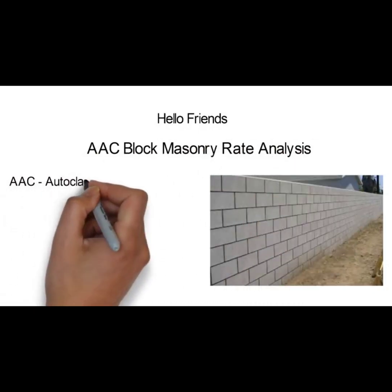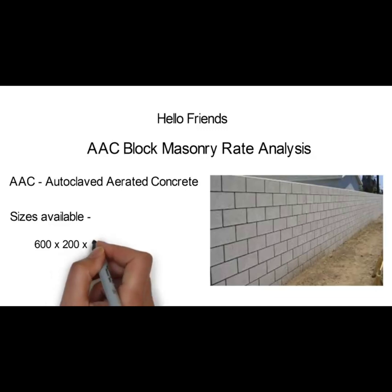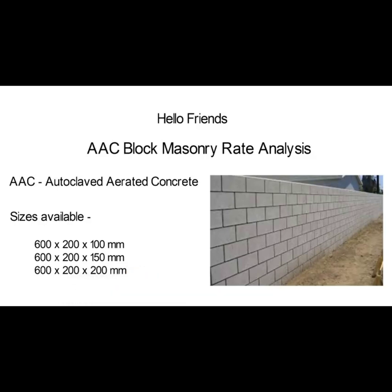AAC means autoclave aerated concrete. The general block sizes available in the market are 600×200×100 mm, 600×200×150 mm, and 600×200×200 mm. Nowadays these AAC blocks have replaced bricks in the construction industry due to their many benefits. For analysis purposes we will consider the size of 600×200×200 mm, which we can use in the construction of a 230 mm wall.